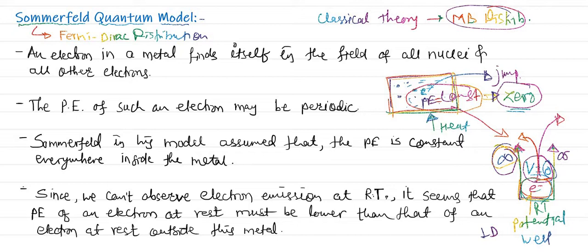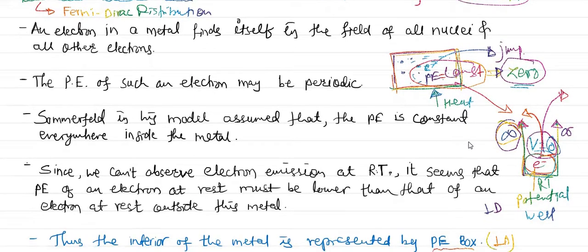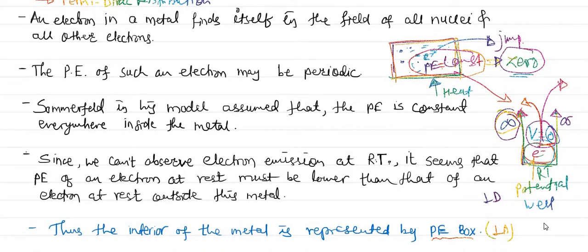First of all we will see how the Sommerfeld model is different from the Drude-Lorenz classical theory. The Drude-Lorenz theory distributed the particles in metal according to the Maxwell-Boltzmann distribution, but Sommerfeld said that no — we have to distribute those particles in accordance with the Fermi-Dirac distribution.